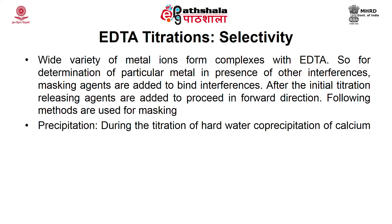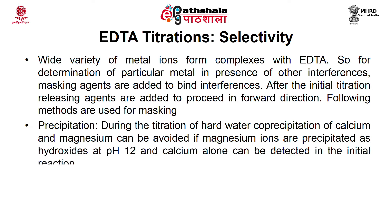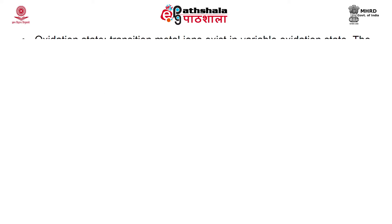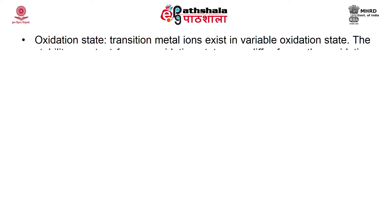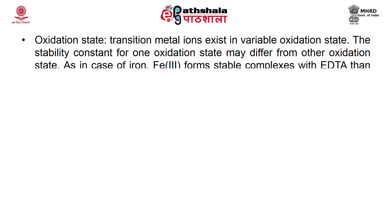Precipitation: during the titration of hard water, co-precipitation of calcium and magnesium can be avoided if magnesium ions are precipitated as hydroxide at pH 12, and calcium alone can be detected in the initial stages. Oxidation state: transition metal ions exist in various oxidation states, and the stability constant for one oxidation state may differ from another. For example, iron(III) forms more stable complexes with EDTA compared to iron(II) complexes.